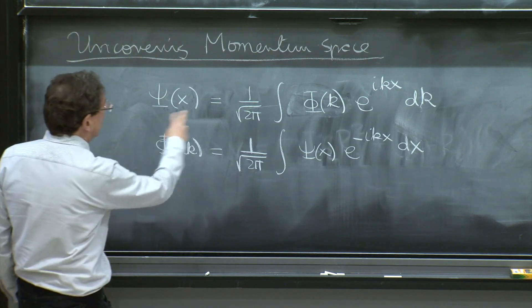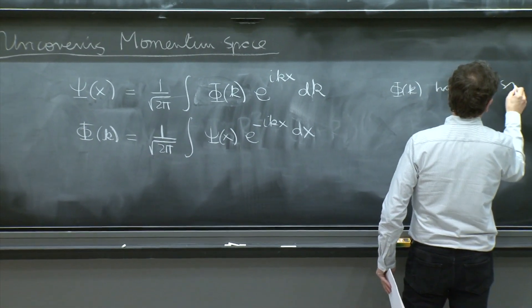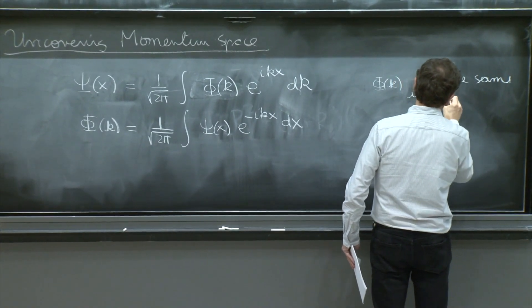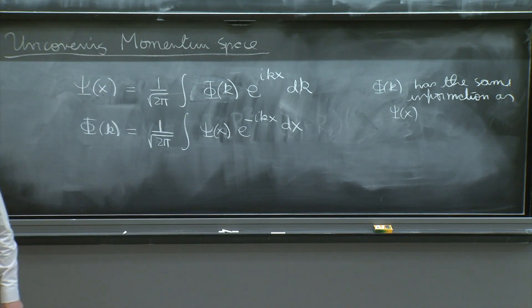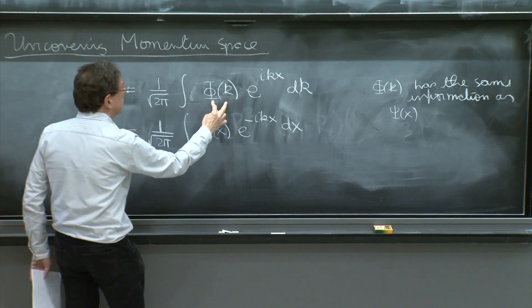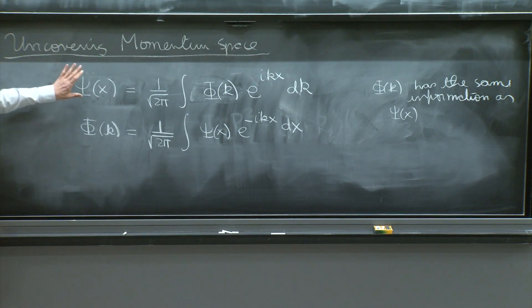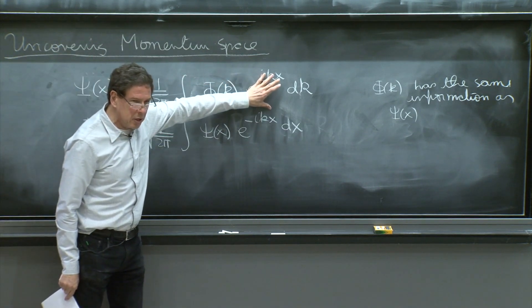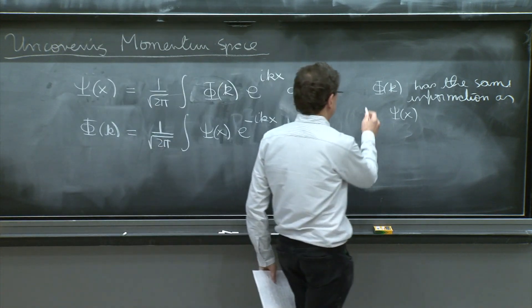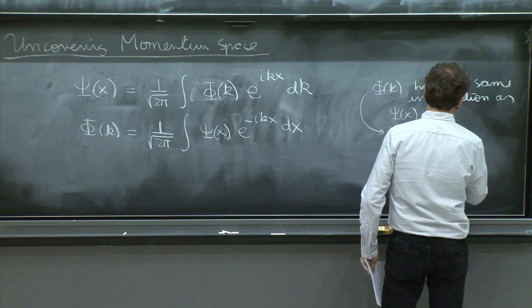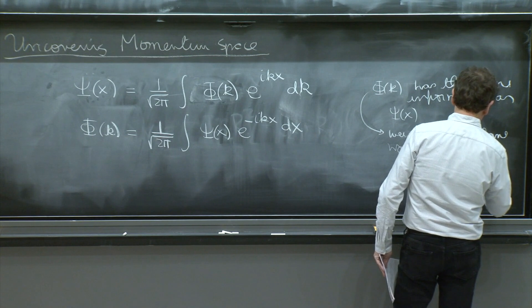It tells you everything that you need to know. We think of φ(k) as having the same information as ψ(x). The other thing we've said about φ(k) is that it's the weight with which you're superposing plane waves to reconstruct ψ(x). The Fourier transform theorem is a representation of the wave function in terms of a superposition of plane waves, and here it's the coefficient that accompanies each exponential. So φ(k) is the weight of the plane waves in the superposition.